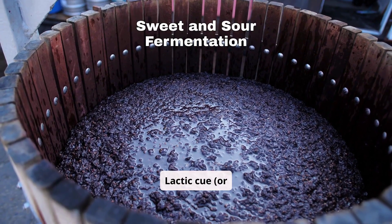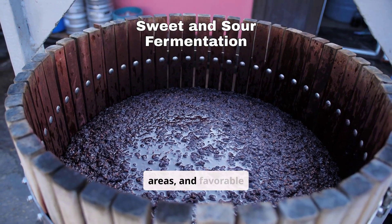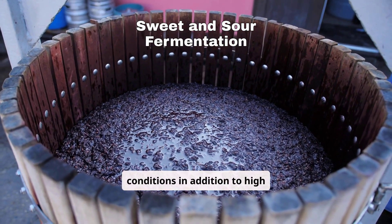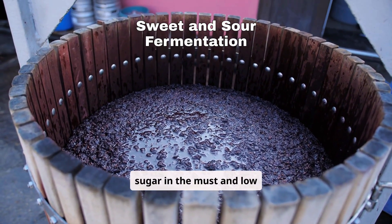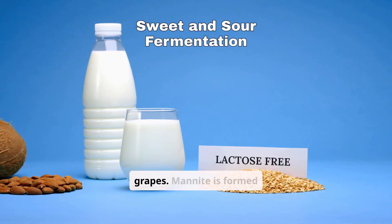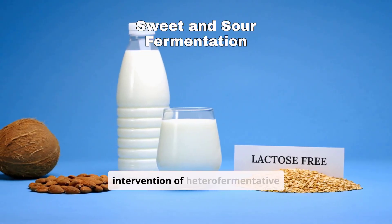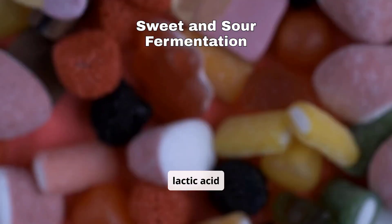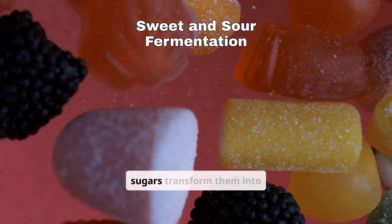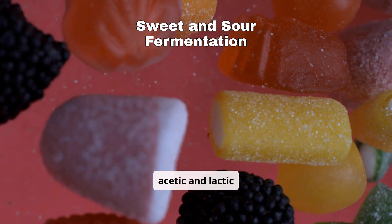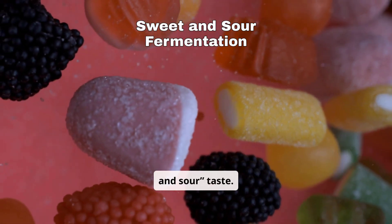Lactic Q, or manite fermentation, is characteristic of warm areas, and favorable conditions in addition to high temperature are excess sugar in the must and low acidity of the grapes. Mannite is formed from fructose by the intervention of heterofermentative lactic acid bacteria. The lactic acid bacteria attacking the sugars transform them into acetic and lactic acid, resulting in a sweet and sour taste.